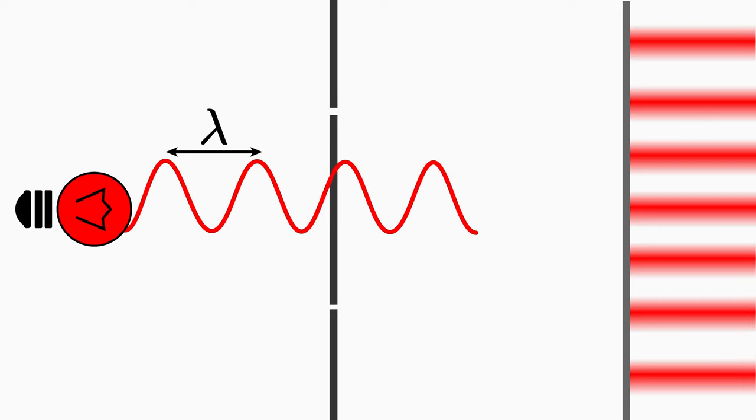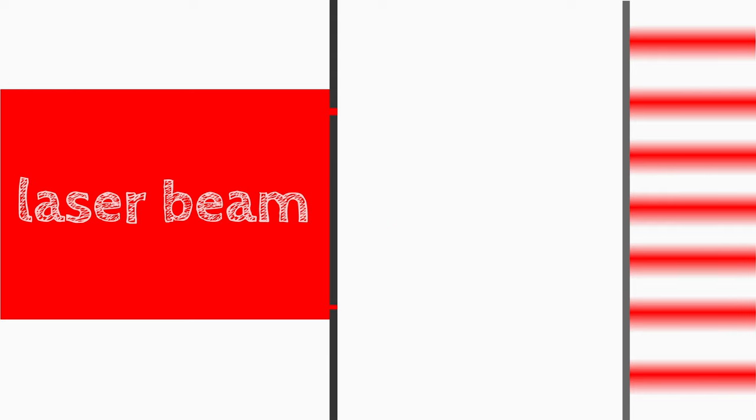You can go even further by using the double slit experiment to find out the wave length of the light. For this let's use a monochromatic light source that emits plain light waves. A laser is perfectly suited for this.